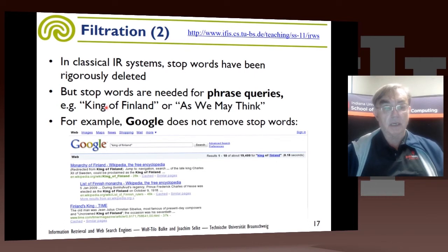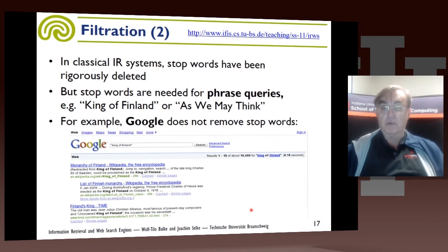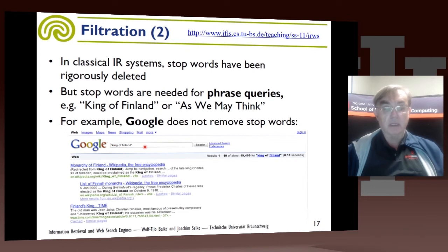Here's an example where you would want the stop word: if you really want 'the king of Finland' or 'to be or not to be', you want to be able to keep that. Here's what Google does for 'king of Finland' — it actually matches properly to 'the king of Finland'. So it does not remove stop words from the raw data, though it may remove them for many queries. Here we put it in quotes to insist that we want 'king of Finland' in that exact order.